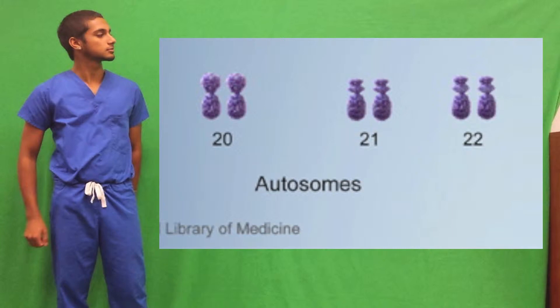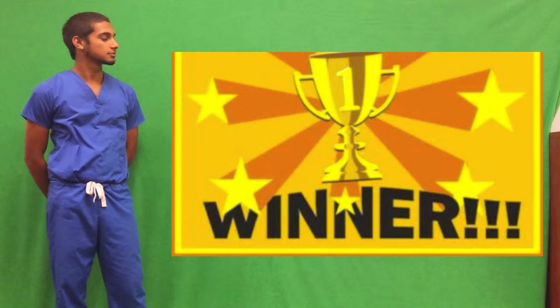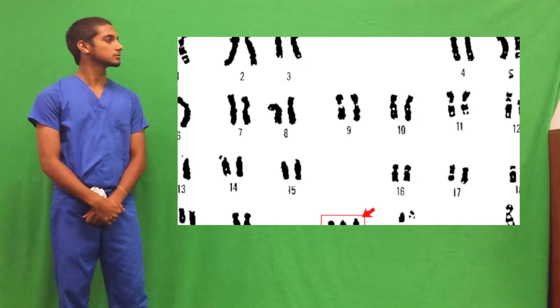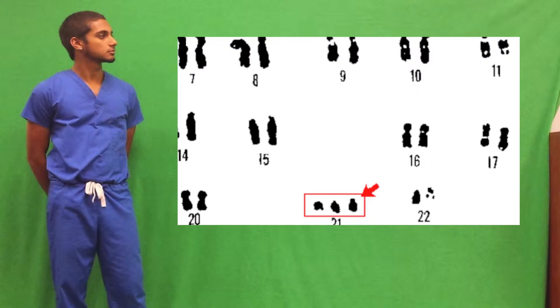Now I want you to take a look at chromosome pair number 21. How many chromosomes are there? Two. I want you to keep note of this. Clap your hands again — we're now going to see a karyotype of someone with Down Syndrome. As you can see, this karyotype is largely the same, with one key difference. When looking at chromosome pair 21, we see there are three, not two chromosomes. This three-chromosome set is what causes Down Syndrome.